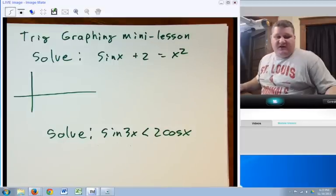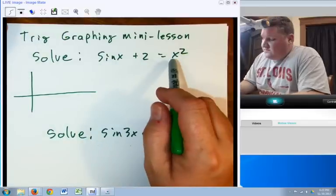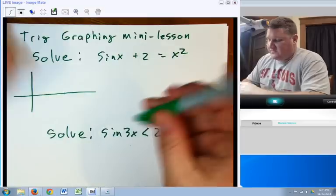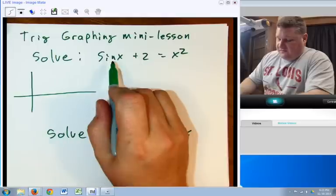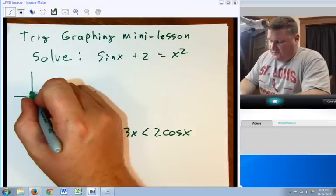Moving on from there, what we have is, I could solve this using algebra, but it's going to be exceedingly difficult because I have trig functions and non-trig functions. We already know how to graph sin x, and this is sin x with a vertical shift of 2. So we're going to move the center up 1, 2. There's my center line.